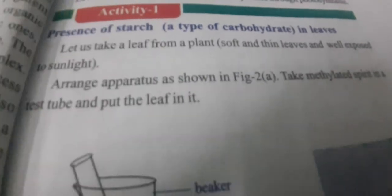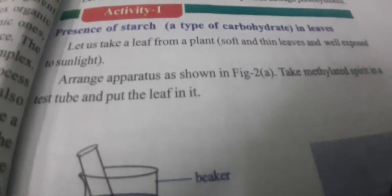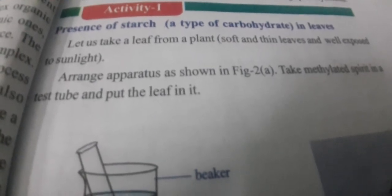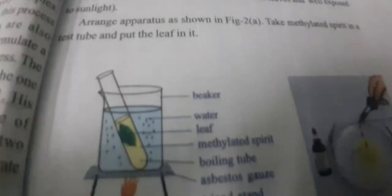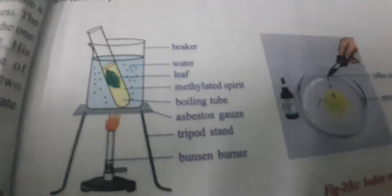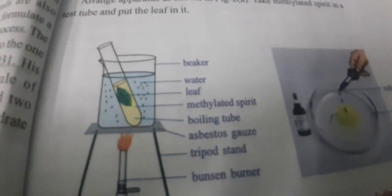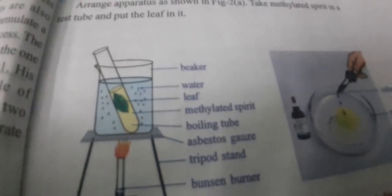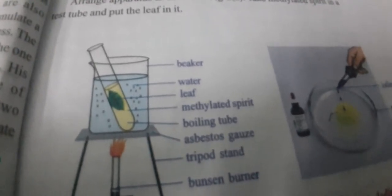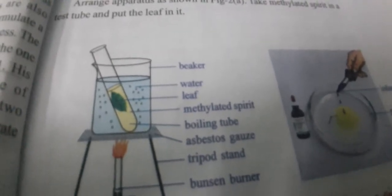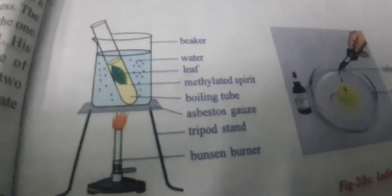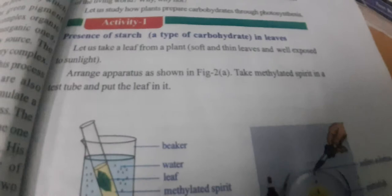Iodine solution and a petri dish are also needed. Now let us start our activity. First, we take a leaf from a plant and arrange the apparatus as shown in the figure. The apparatus includes a beaker, water, leaf, methylated spirit — which is a type of indicator — boiling tube, water bath, gauze, tripod stand, and Bunsen burner.